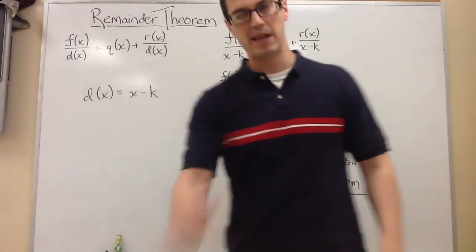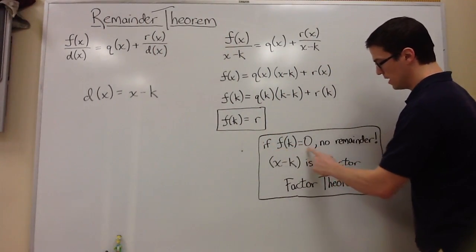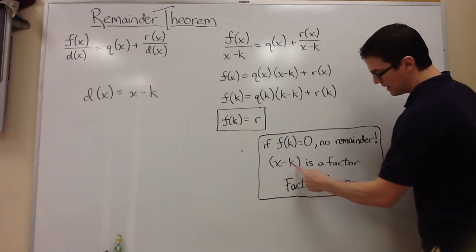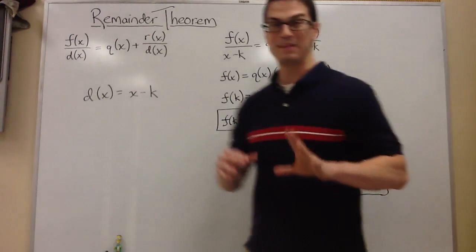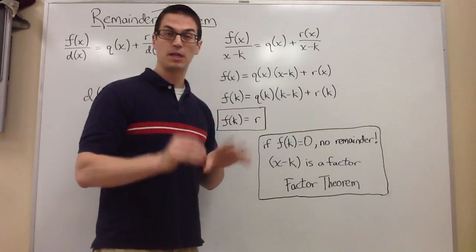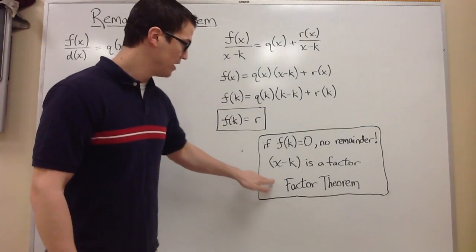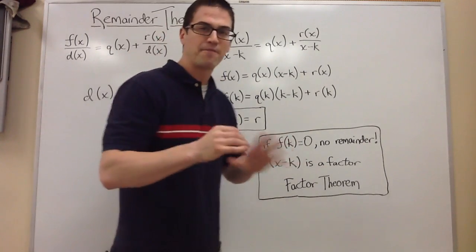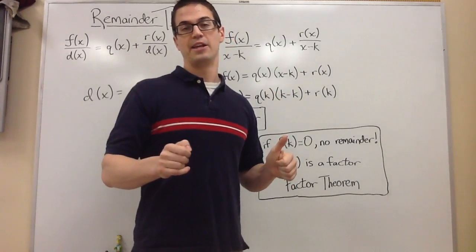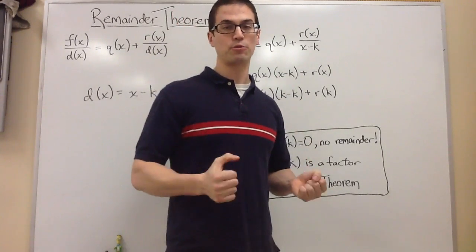Now, if there is no remainder, or the remainder is equal to 0, if f of k is equal to 0, there is no remainder. If there's no remainder, then you can say that x minus k is a factor, and this is important. That means it divides evenly, and that's called factor theorem. This is going to be really important later on when we're figuring out the roots of polynomials.